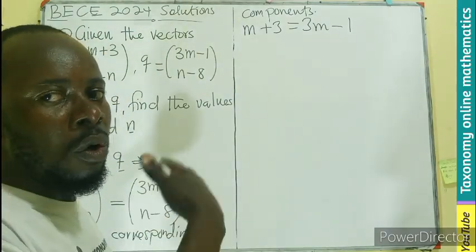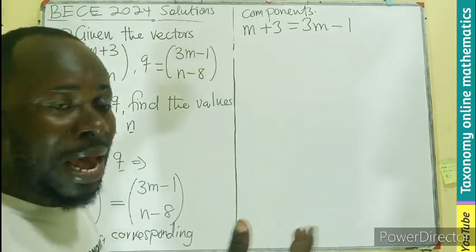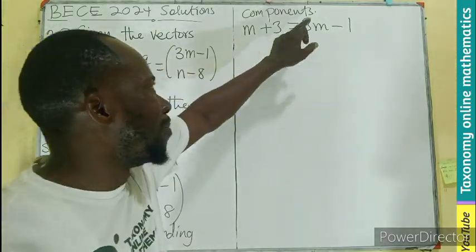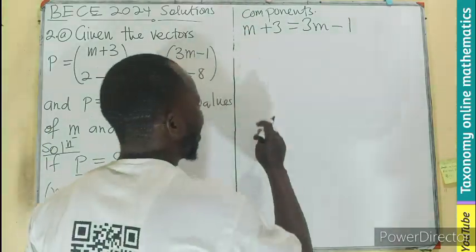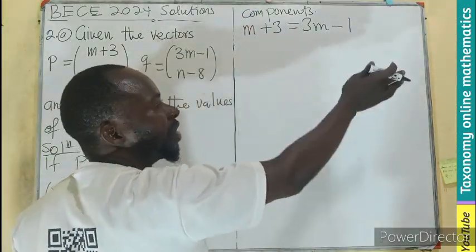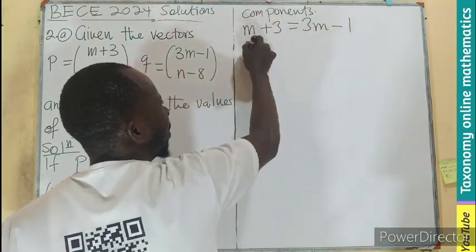The M can come to the left or go to the right. But I can be directed by the coefficient of the M. I see this is bigger. So I maintain it there and send the single one to the other side. Meaning I'll be subtracting M from both sides, adding one to both sides.